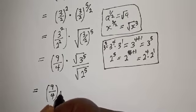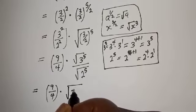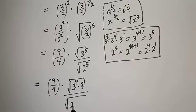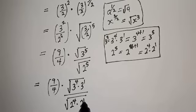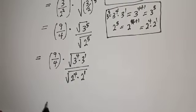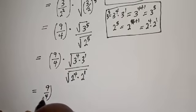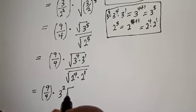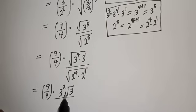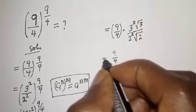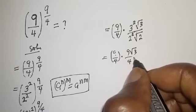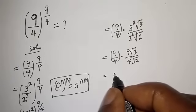So the expression becomes 9/4 multiplied by the square root of 3^4 times 3, divided by the square root of 2^4 times 2. Now √(3^4) = 3² = 9, and √(2^4) = 2² = 4. This gives us 9/4 multiplied by 9√3 divided by 4√2, with a remaining √3 and √2 inside.